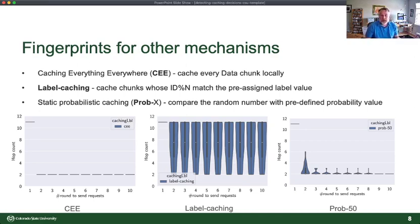If you're doing label caching, which is sort of this pre-assigned computation to figure out if this router is one you should cache in, you get these things that look sort of like inverted missiles. And if you do probabilistic caching, and it's static, say a 50% chance of caching at any given time,